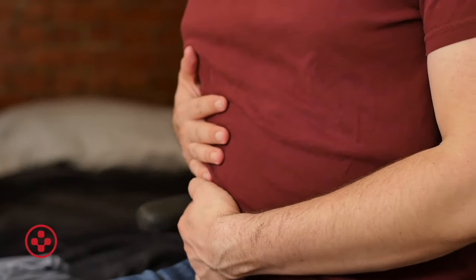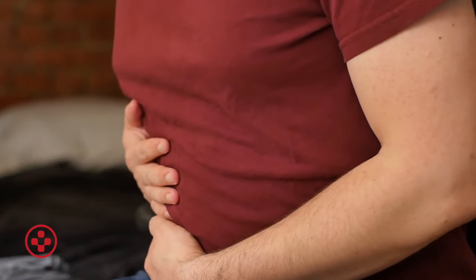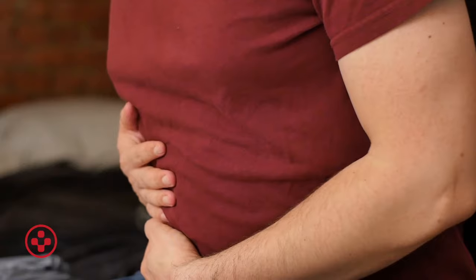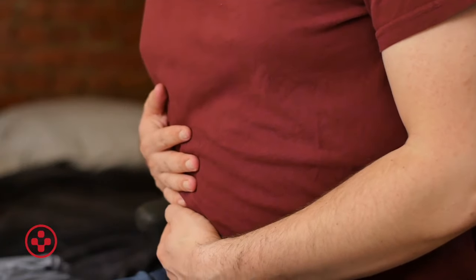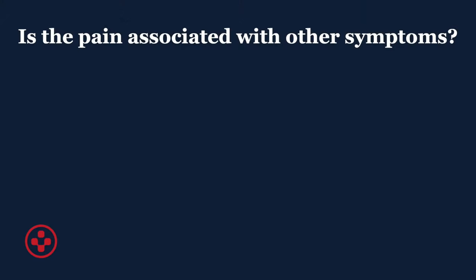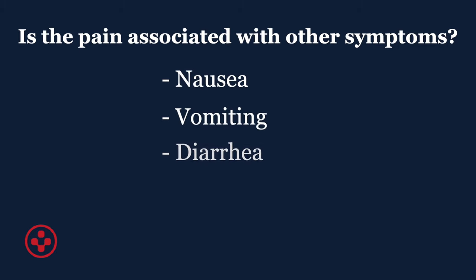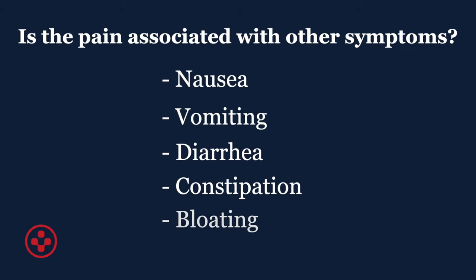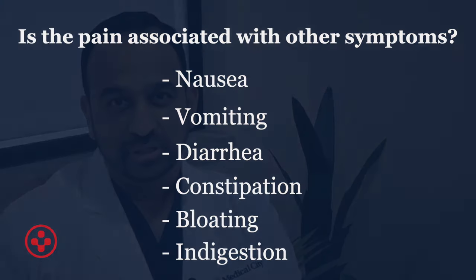Number three is you have to know if the pain is associated with any other symptoms. Typically, abdominal pain is associated with other nonspecific symptoms like nausea, vomiting, diarrhea, constipation. You feel bloated. You might have a little bit of indigestion as well. If any of these symptoms are associated with it, then you have to take that into account.